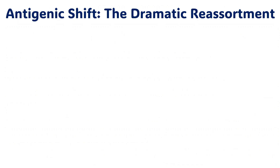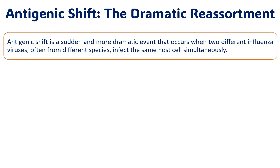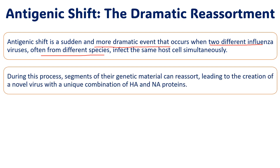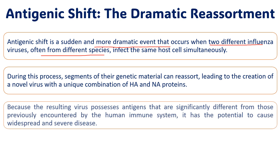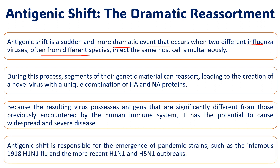Antigenic shift is a dramatic reassortment — a sudden and more dramatic event that occurs when two different influenza viruses, often from two different species, infect the same host and same cells at the same time. During this process, segments of genetic material can reassort, leading to the creation of a novel virus with a unique combination of hemagglutinin and neuraminidase proteins. This resulting virus possesses antigens significantly different from previously existing ones — it is a completely new protein.